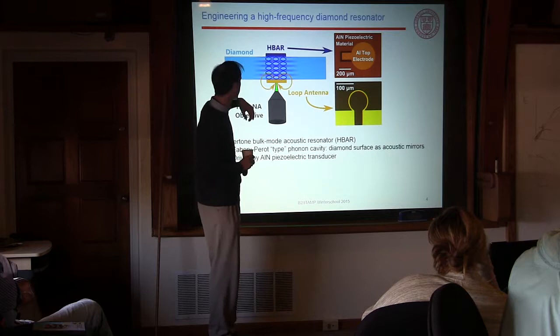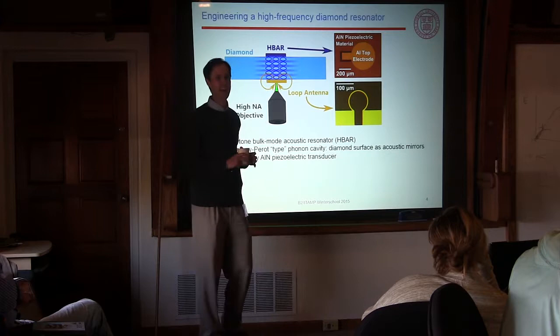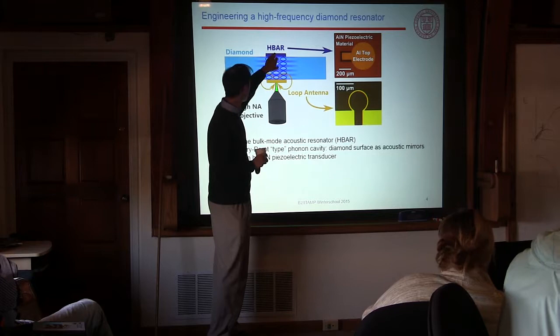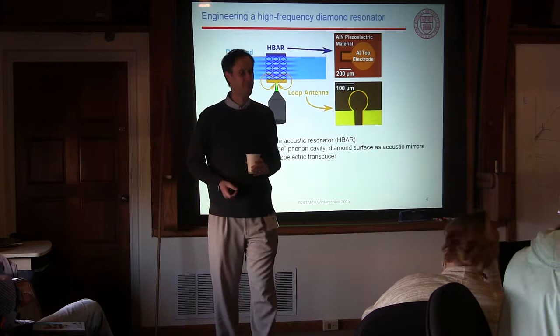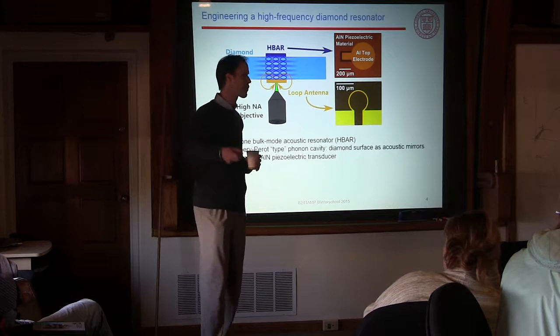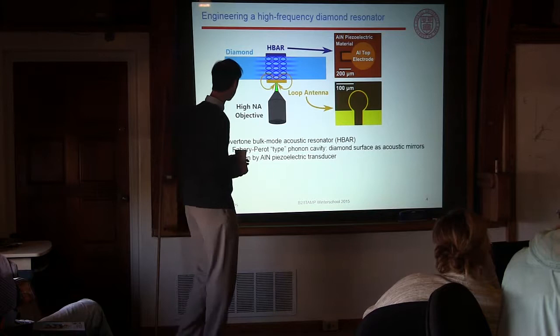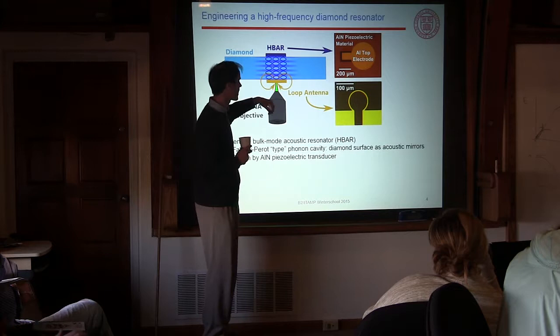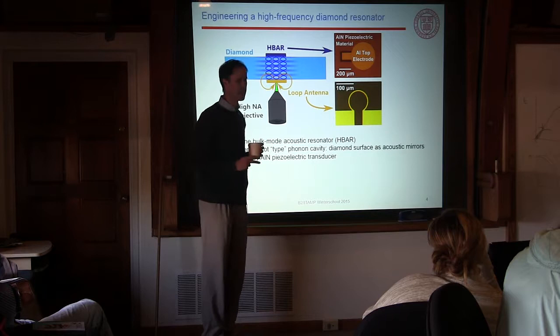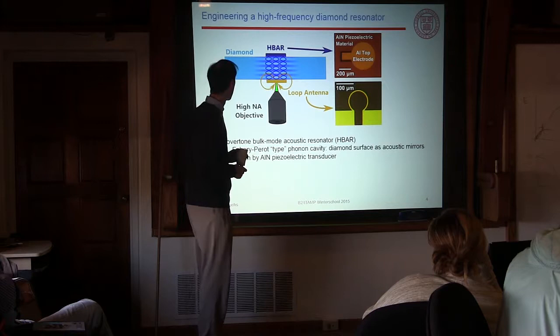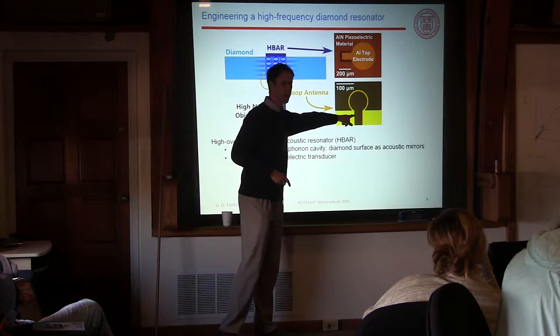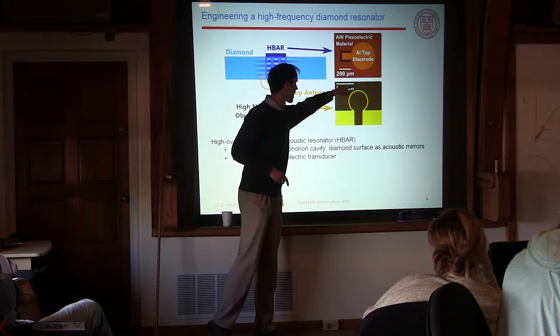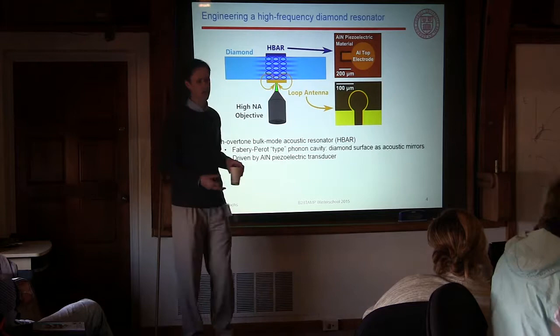We fabricate a device that engineers call an H-BAR — a High Overtone Bulk Acoustic Resonator. As an AMO person, you can think of it as a Fabry-Perot cavity, but for sound waves instead of light waves. To excite it, we fabricate a piezoelectric transducer — just a piezoelectric material deposited on the diamond sandwiched between two metal electrodes; we started with aluminum nitride. On the underside, we have a simple wire structure with bonding pads: we drive microwave current through it to get a microwave magnetic field for conventional spin control.